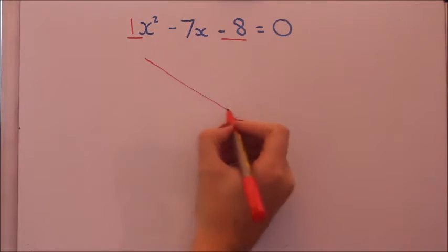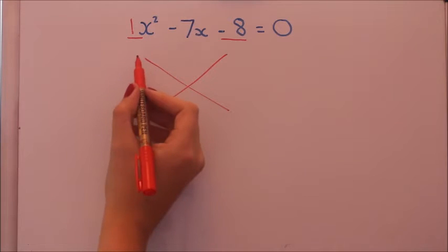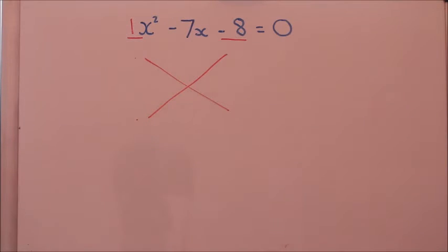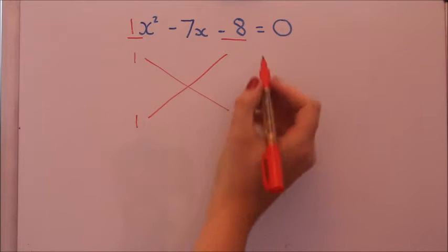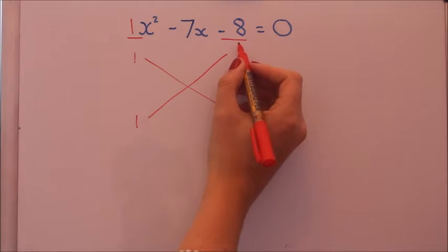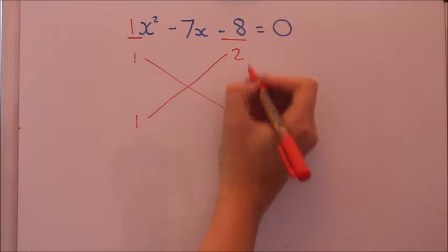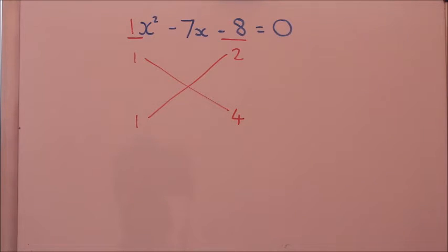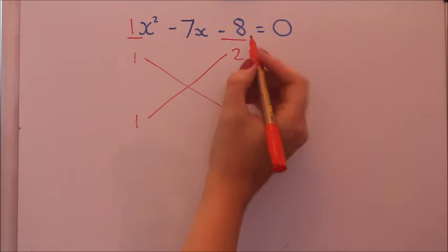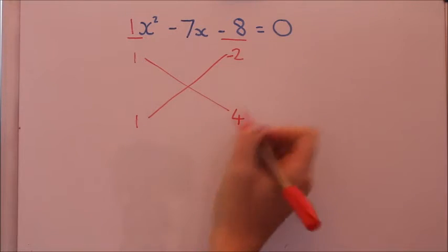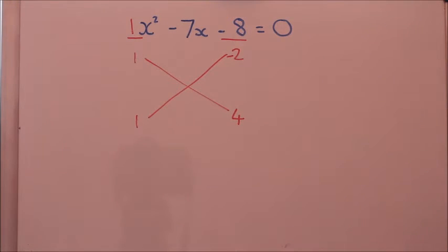I draw a cross and I put two numbers here that multiply to give that one, so they've got to be one obviously, and two numbers here that give minus eight. So I'm going to try two and four. Now it's minus eight, so one of them has to be minus. I'll just try minus two.